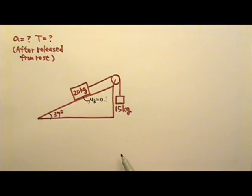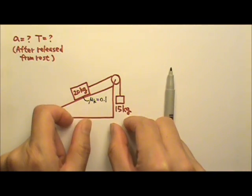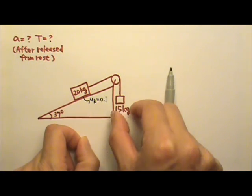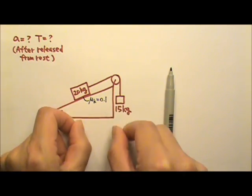So let's follow the problem solving procedures. The first thing is we have to decide the direction of acceleration. Now this one is not so trivial because the 20kg box is heavier, but to decide which way things go, the 200N and the 150N, they are not competing against each other.